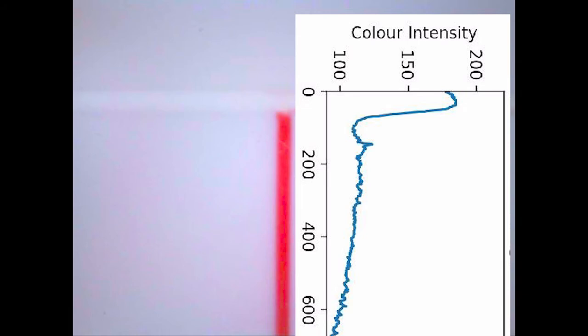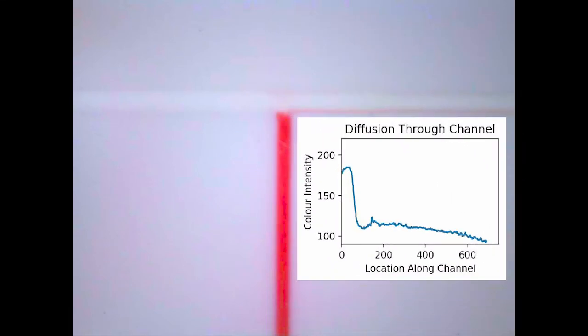The flow is stopped and we plot the color intensity along the vertical channel to determine the relative concentration of pentane in the oil. We can watch this plot in real time as the two fluids now begin to mutually diffuse along the channels.